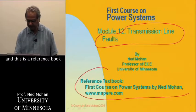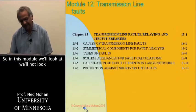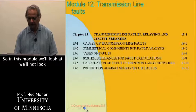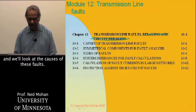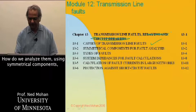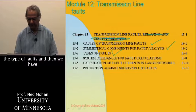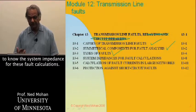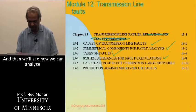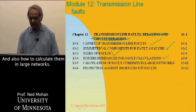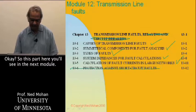This is our reference book from which this material is taken. In this module, we will not look at relaying and circuit breakers. We'll just talk about transmission line faults and look at the causes of these faults. How do we analyze them using symmetrical components, the types of faults, and we have to know the system impedance for these fault calculations. Then we'll see how we can analyze and calculate the fault currents and how to calculate them in large networks.